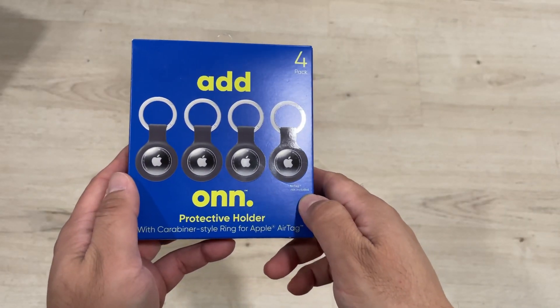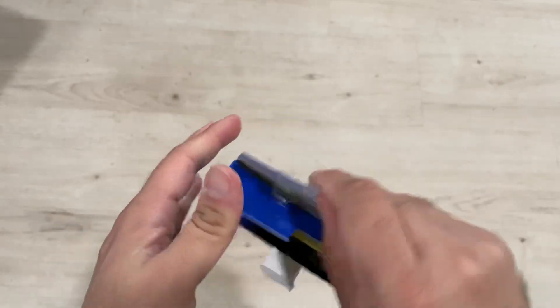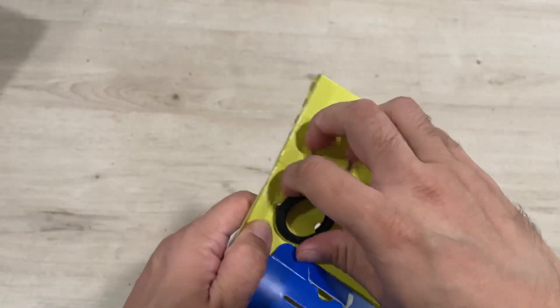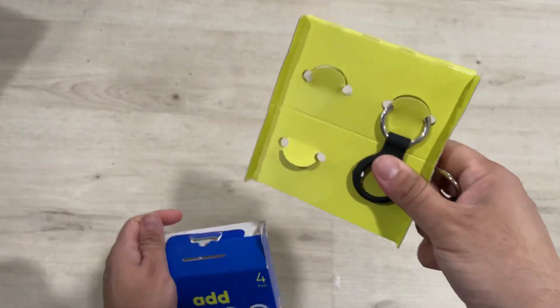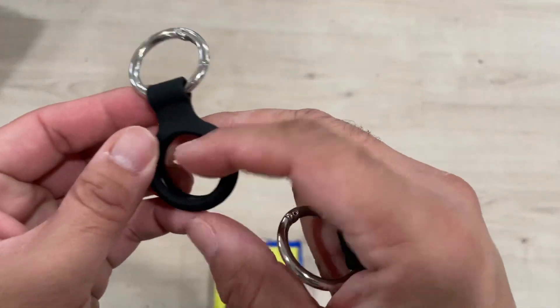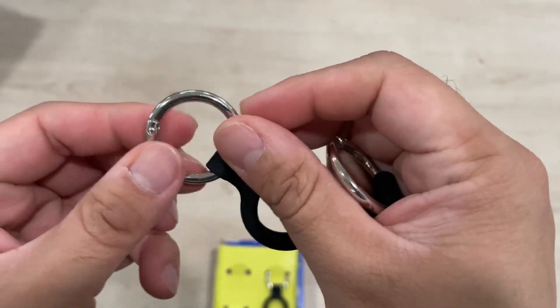Hey guys, this is the AirTag case, a protective case with a carabiner. Basically, this is a silicon cover case for the AirTag and this is the carabiner on the top so you can use it as a keyring or anything. It's a soft material with a hard carabiner on top.